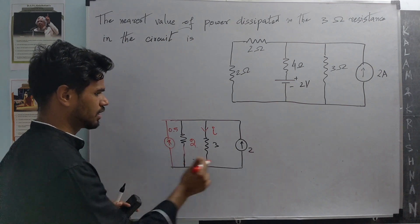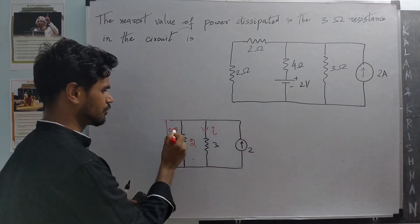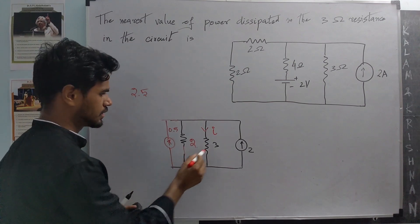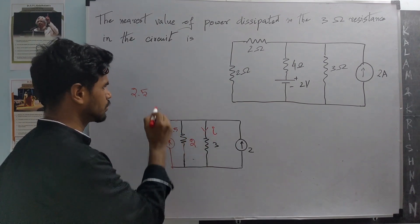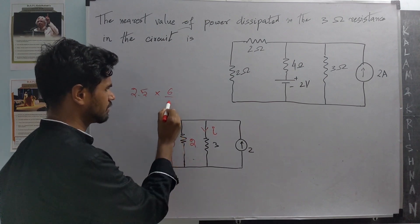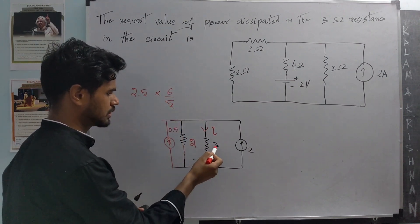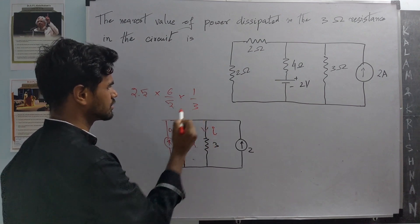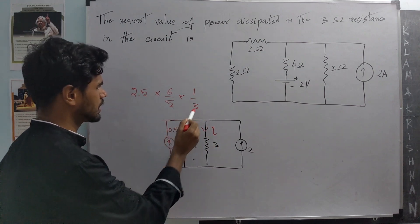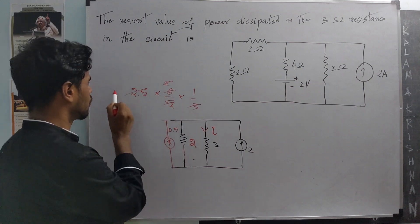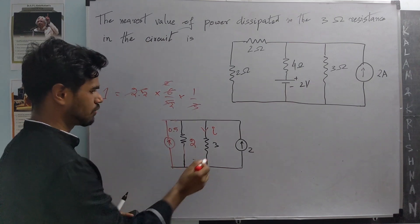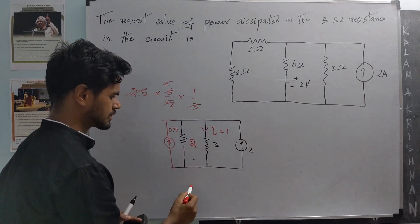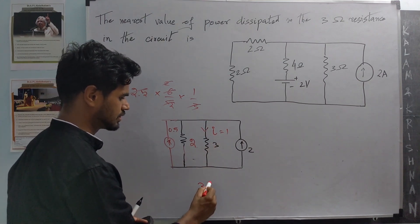Now we have a total current of 2.5 flowing to this node. So 2.5 is the total current, times the equivalent resistance of 2 and 3 in parallel which is 6 by 5, times the inverse of the 3 ohm resistance which is 1 by 3, and this value turns out to be 1. So the current flowing in the 3 ohm resistance is 1 ampere, and the power dissipated is I squared R, which is 3 watts.